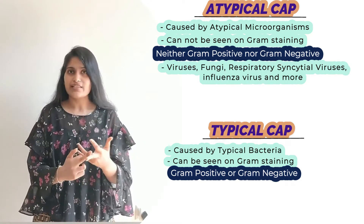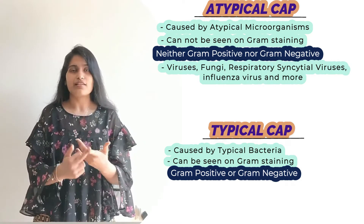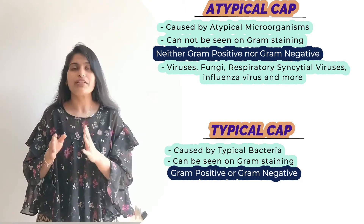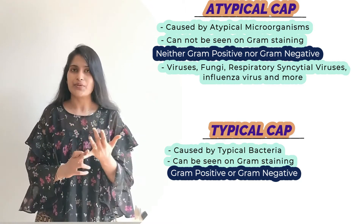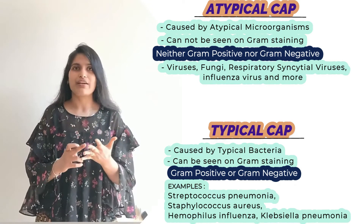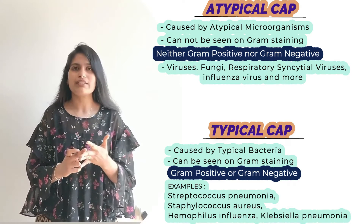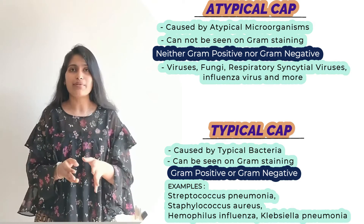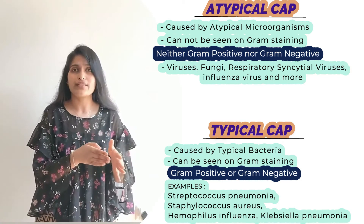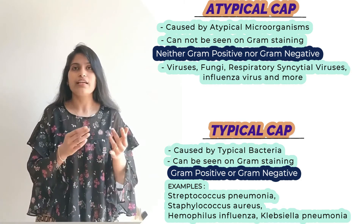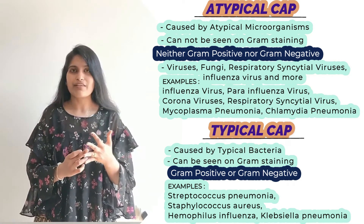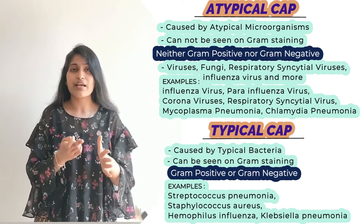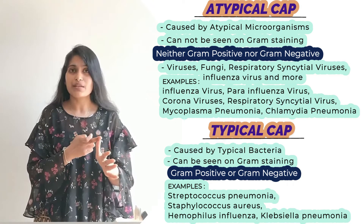Examples of typical bacteria include Streptococcus pneumoniae, Staphylococcus aureus, Haemophilus influenzae, and Klebsiella pneumoniae. Examples of atypical microorganisms include influenza virus, parainfluenza virus, coronaviruses, respiratory syncytial viruses, Mycoplasma pneumoniae, and Chlamydia pneumoniae.